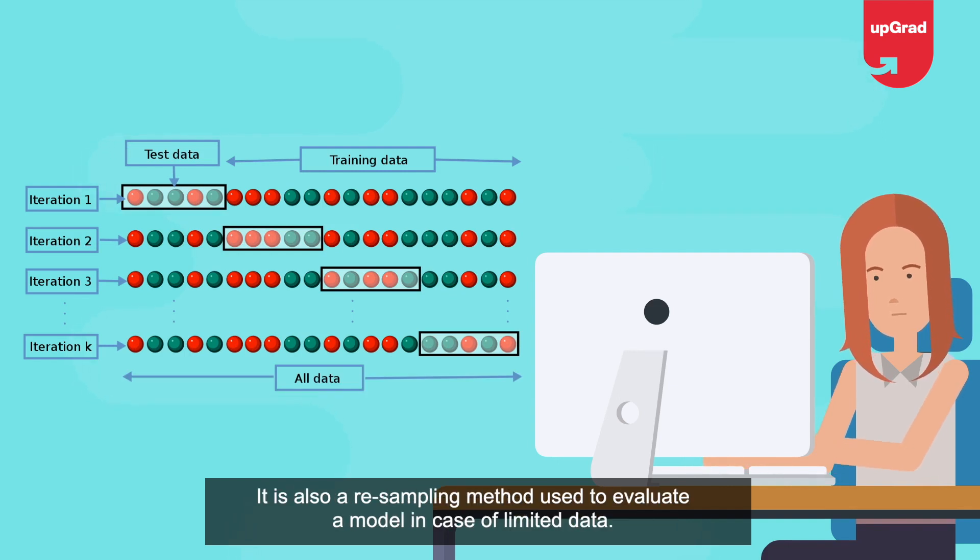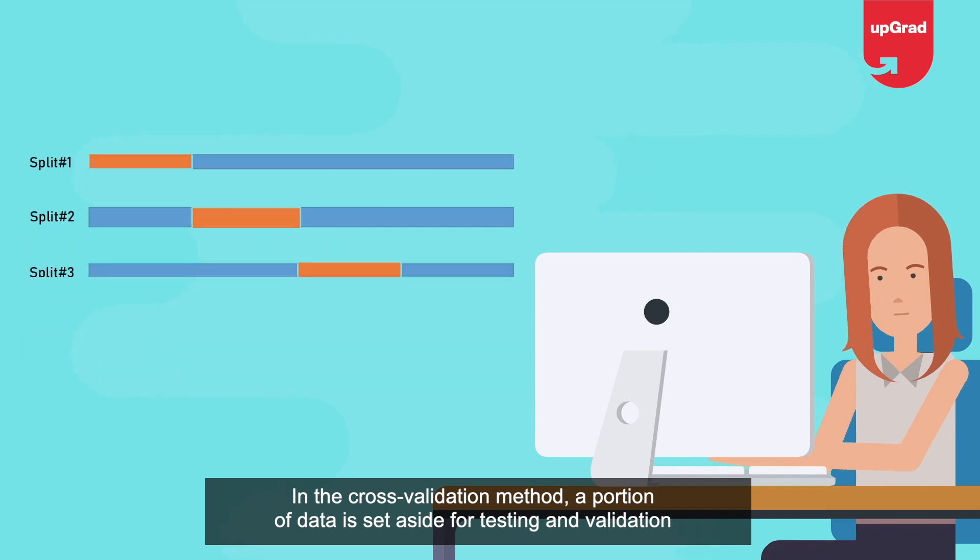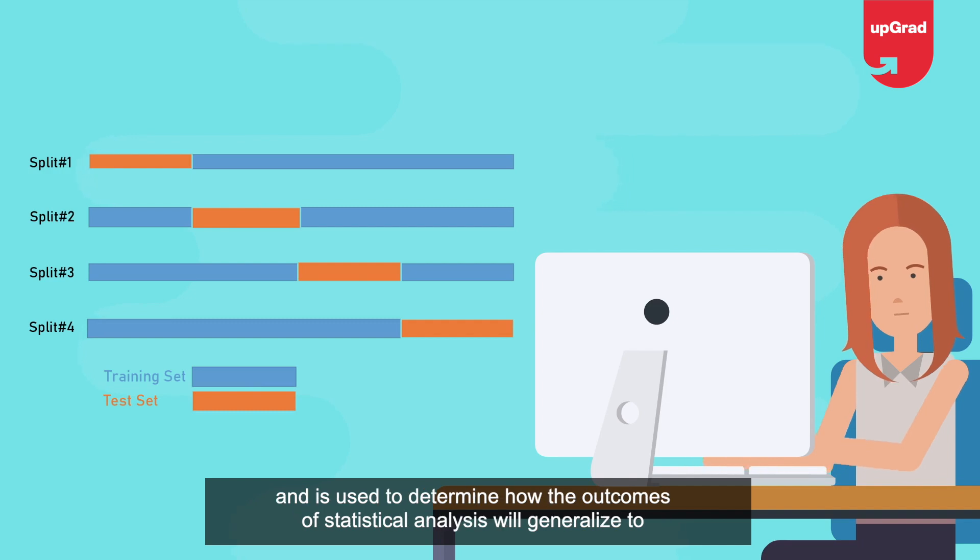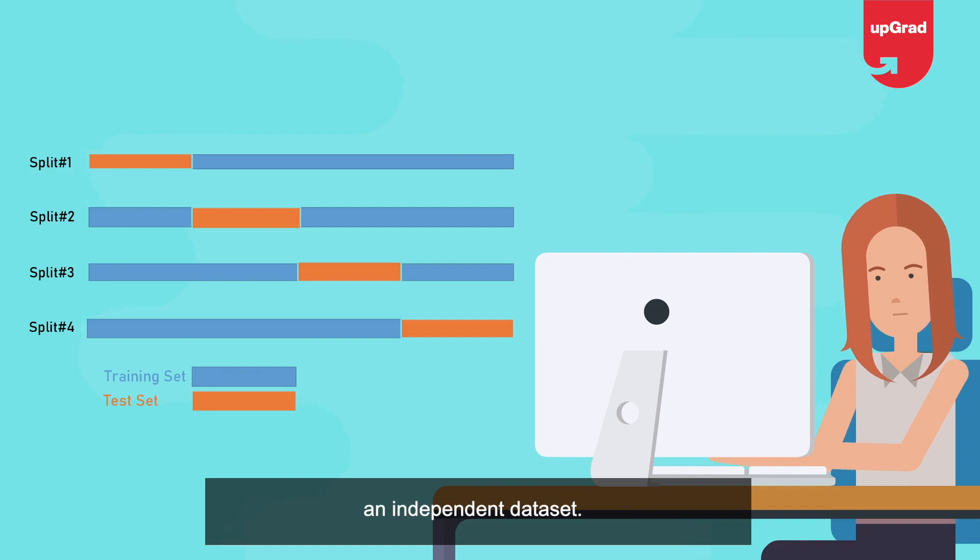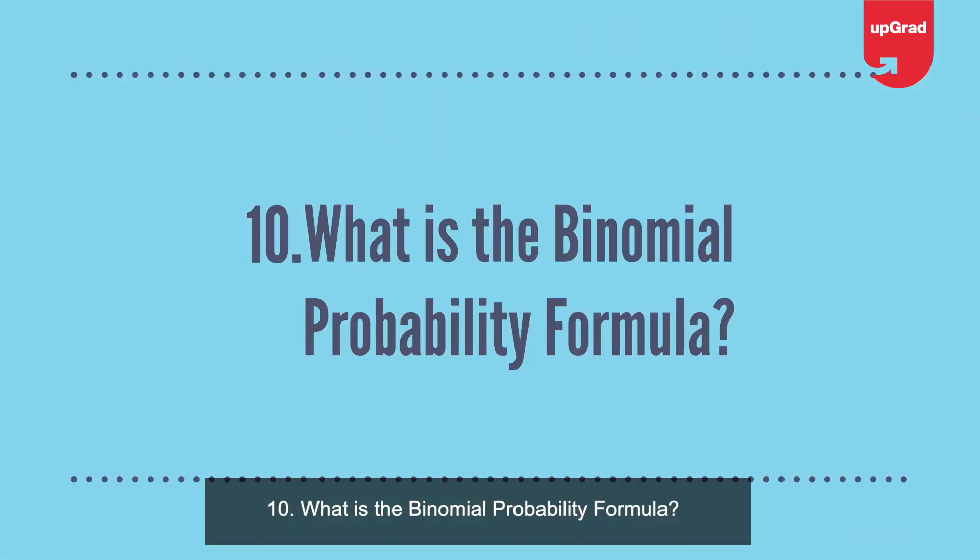Question 9: What is cross-validation? Cross-validation is a model validation technique employed to test the effectiveness of machine learning models. It is also a resampling method used to evaluate a model in case of limited data. In cross-validation, a portion of data is set aside for testing and validation and is used to determine how the outcomes of statistical analysis will generalize to an independent dataset.